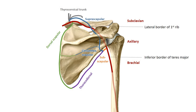You may now be able to appreciate three areas where these vessels have an overlapping region of supply, also known as an anastomosis. These are here between the suprascapular and circumflex scapular arteries, here between the circumflex scapular and dorsal scapular arteries, and here between the dorsal scapular and thoracodorsal arteries.